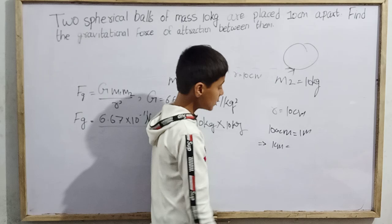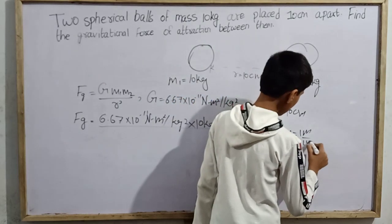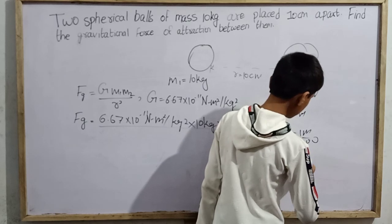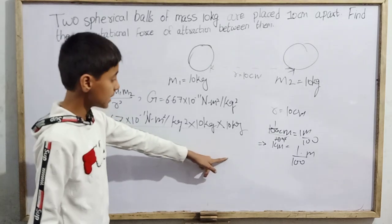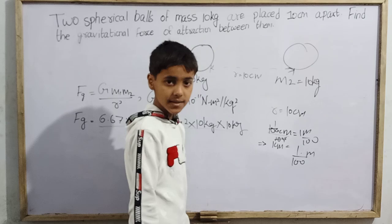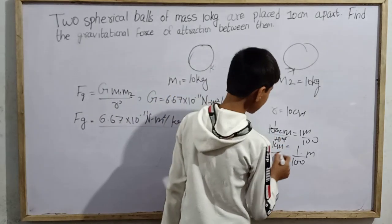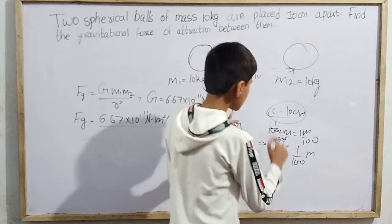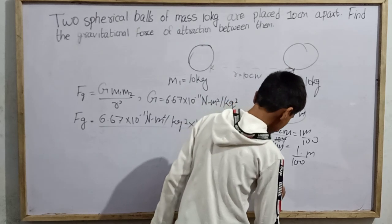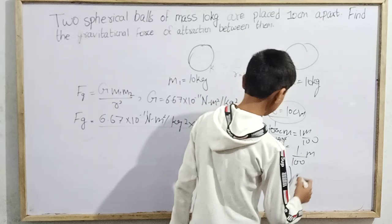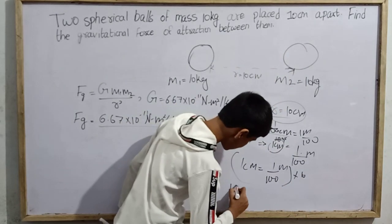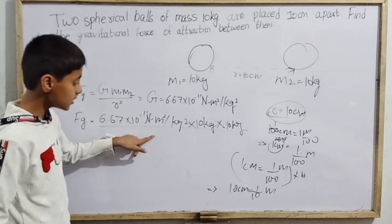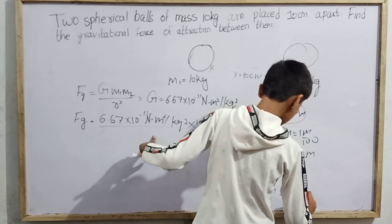We know 100 cm = 1 m, so 1 cm = 1/100 m. Multiplying both sides by 10, we get 10 cm = 10/100 m = 1/10 m. So the separation r = 1/10 m = 10⁻¹ m.